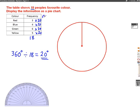I can have an extra column called angle. So 3 times 20, the angle for red will be 60 degrees. 4 times 20, the angle for blue will be 80 degrees. 6 times 20, the angle for green will be 120 degrees. And 5 times 20, the angle for yellow will be 100 degrees. And we can check we've done this right, because it will add up to 360. 60 add 80 is 140, add 120 gives us 260, add 100, that adds up to 360 degrees. So we know we're doing it right.